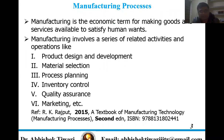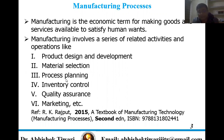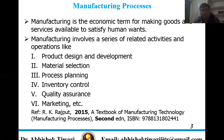So what is manufacturing process? Manufacturing is an economic term for making goods and services available to satisfy human wants. Manufacturing involves a series of related activities and operations like product design and development, material selection, process planning, inventory control — what items are required for the manufacturing process — and then quality assurance after the product has been made, and finally the marketing part.